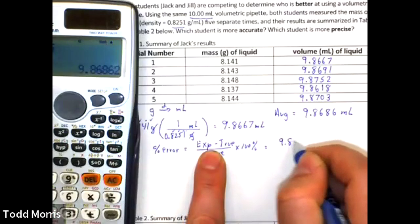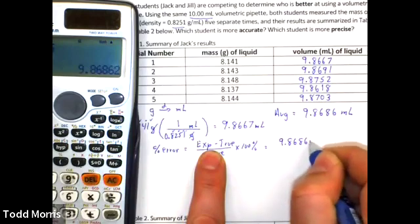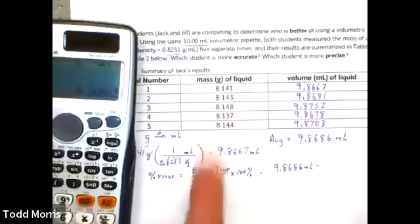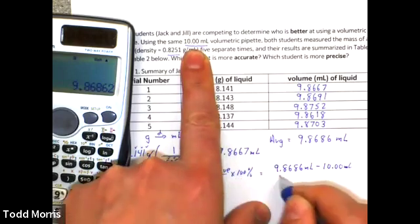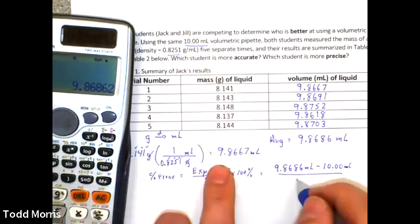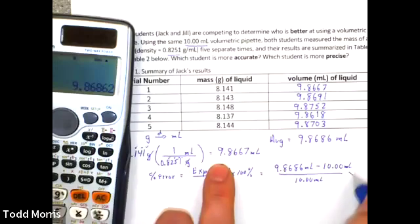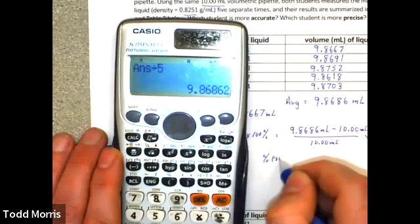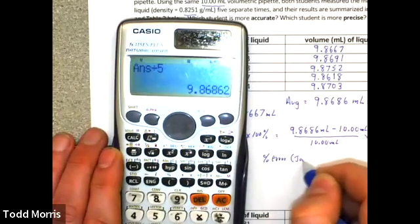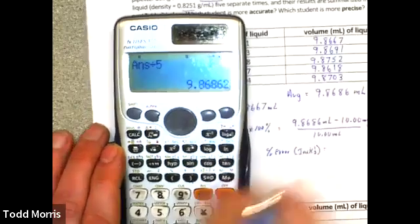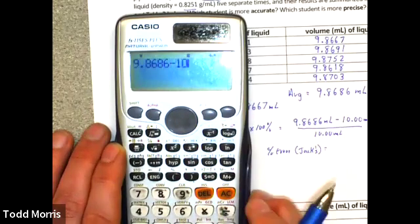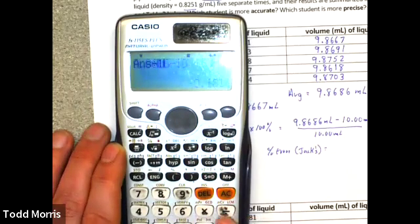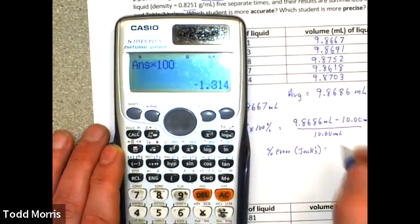So, the percent error, then, is 9.8686 milliliters minus the true value, which is 10 milliliters. Pipette is manufactured to deliver 10 milliliters of liquid divided by that same true value of 10 milliliters. So, in this case, Jack's percent error is 9.8686 minus 10 divided by 10 times 100, or a negative 1.3 percent.